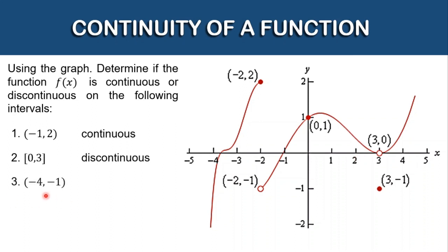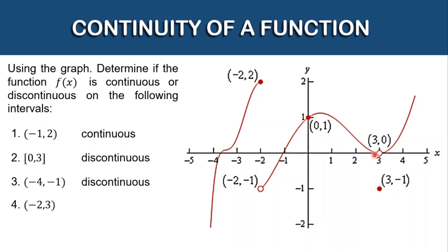For the third interval between negative 4 and negative 1, not including the endpoints, we trace from the right of negative 4 toward the left of negative 1, but before reaching negative 1 there is a gap — an example of jump discontinuity — so the function is discontinuous. For the fourth interval between negative 2 and positive 3, not including either endpoint, we start from the right of negative 2. Even though there is a hole nearby, it is not included. Tracing to positive 3 without lifting the pen, the function is continuous on this interval.